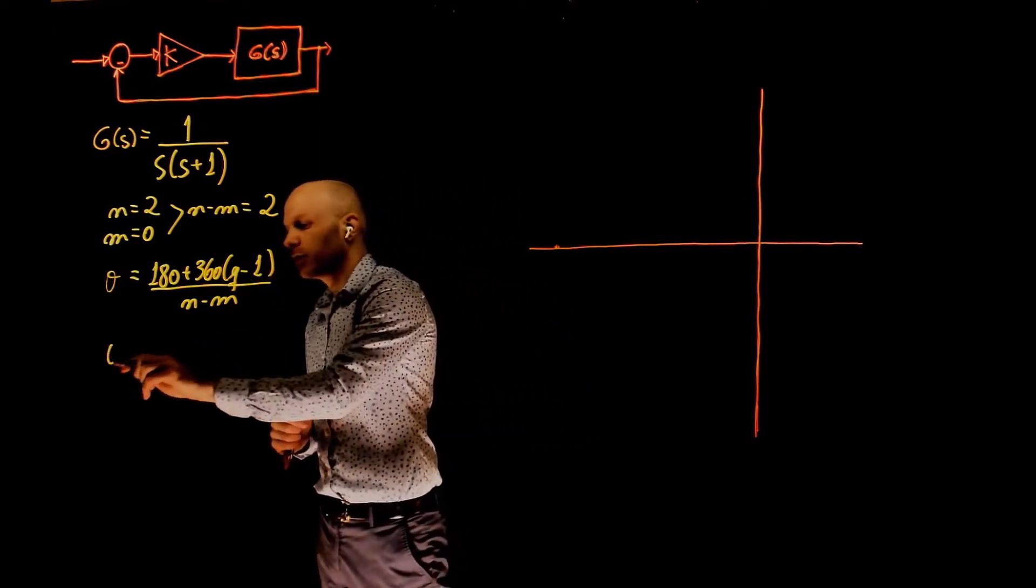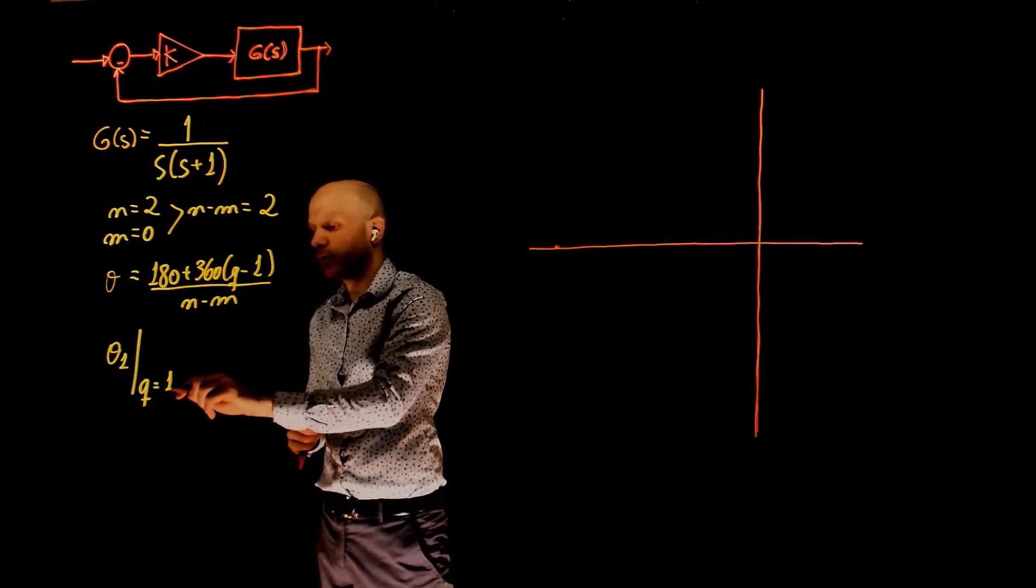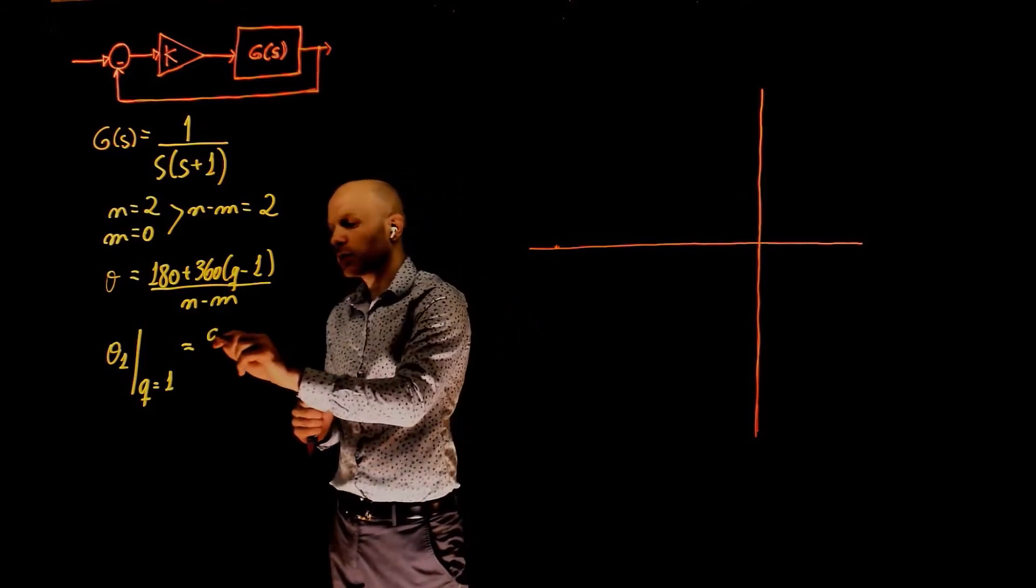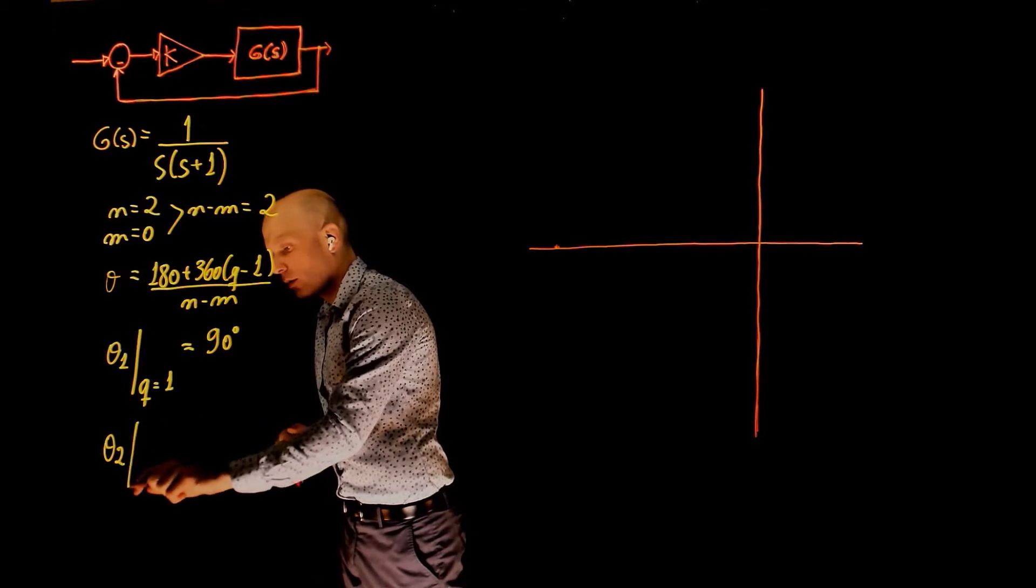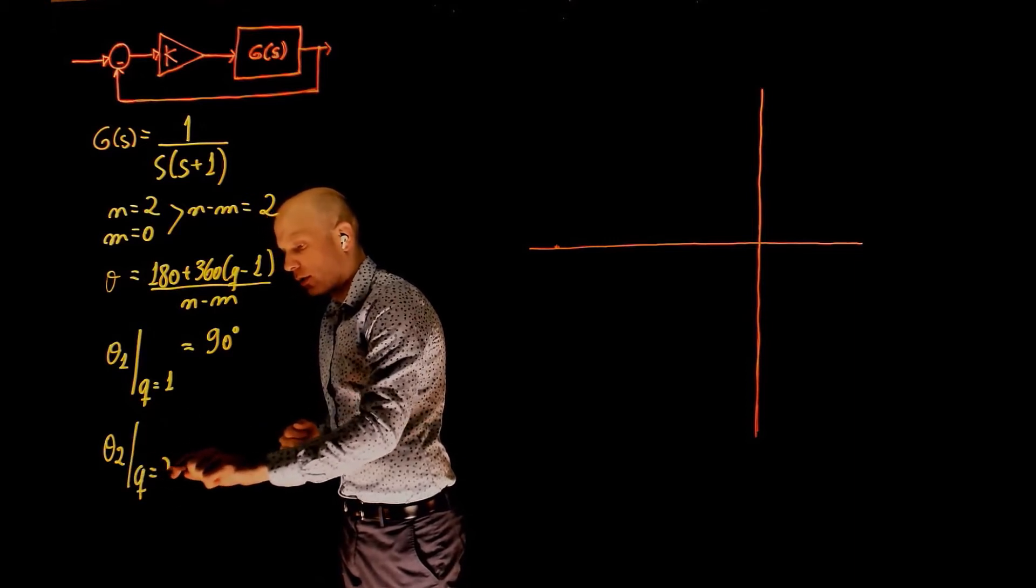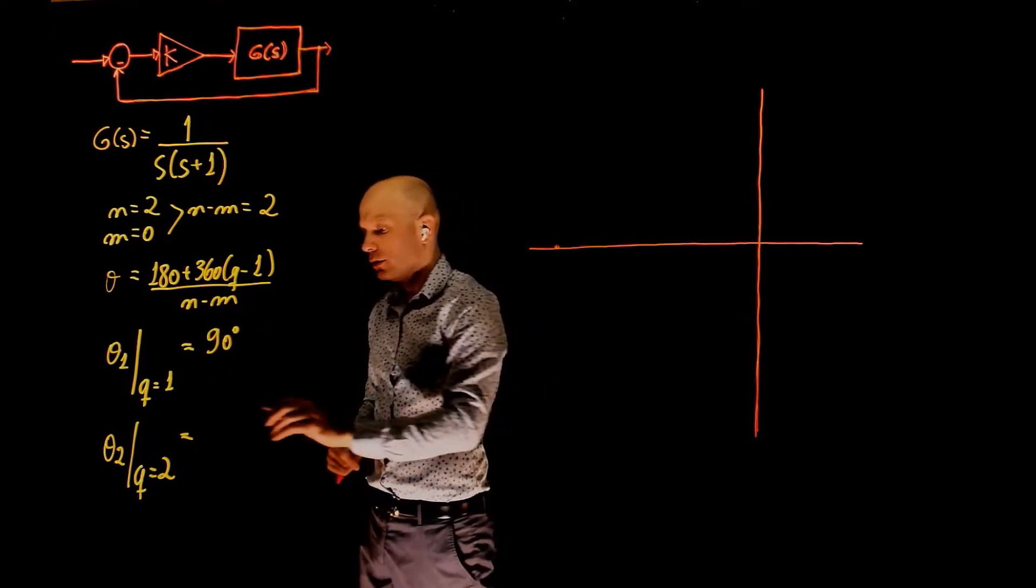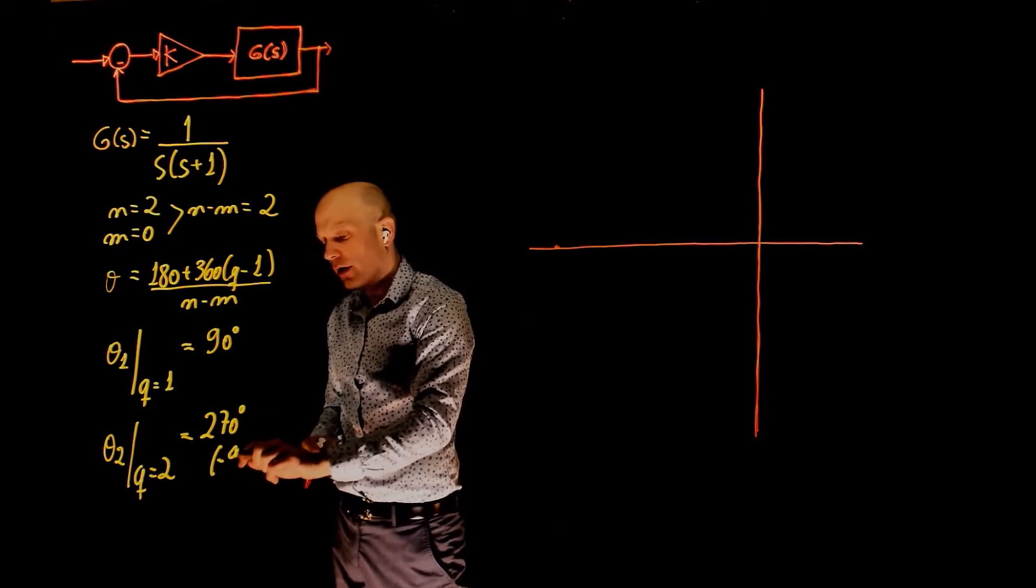The first of the asymptotes has an angle theta 1 that we determine by setting q to 1, and this is 180 divided by 2, that's 90 degrees. Theta 2 is obtained by setting q equals 2, and this will give 180 plus 360 divided by 2, that is 270 degrees or negative 90 degrees.